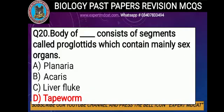Question number 20: The body of dash consists of segments called proglottids, which contain mainly sex organs. This refers to the tapeworm. The correct option is D, tapeworm.